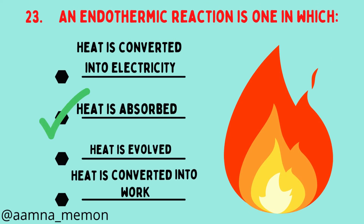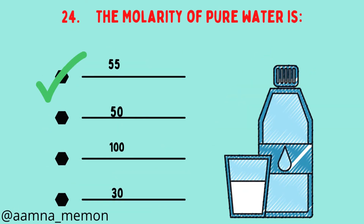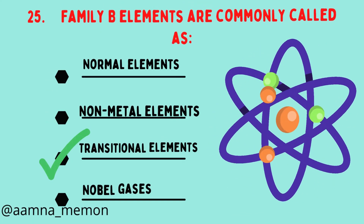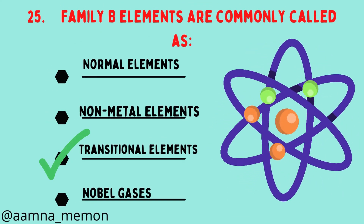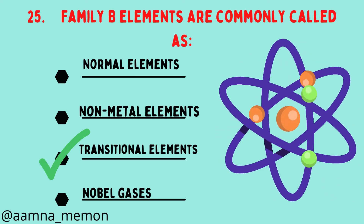An endothermic reaction is one in which heat is absorbed. The molarity of pure water is 55. Family B elements are commonly called transition elements.